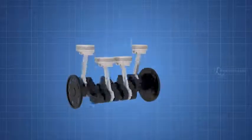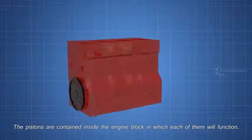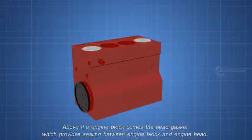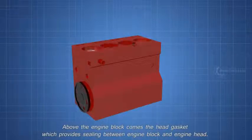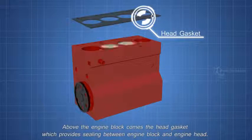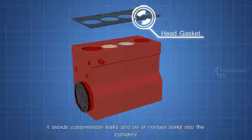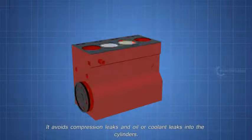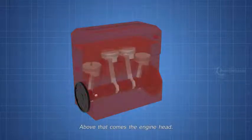These are the main parts involved in an engine cooling system. Now, let's see how these parts work together. The pistons are contained inside the engine block, in which each of them will function. Above the engine block comes the head gasket which provides sealing between engine block and engine head. It avoids compression leaks and oil or coolant leaks into the cylinders. Above that comes the engine head.